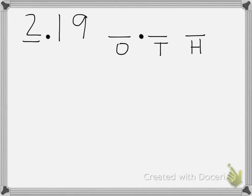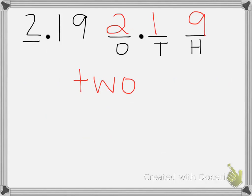Our last one, we have the number 2 and 19 hundredths, and we want to know the value of the 2. The 2 is in the ones place, so its value is 2 — just 2. That's all we need for that.